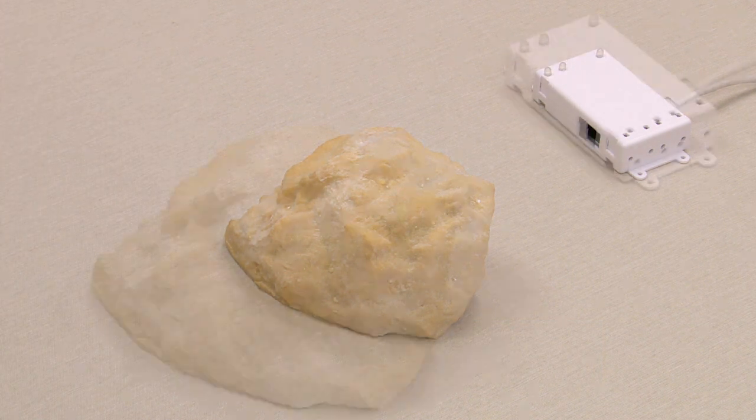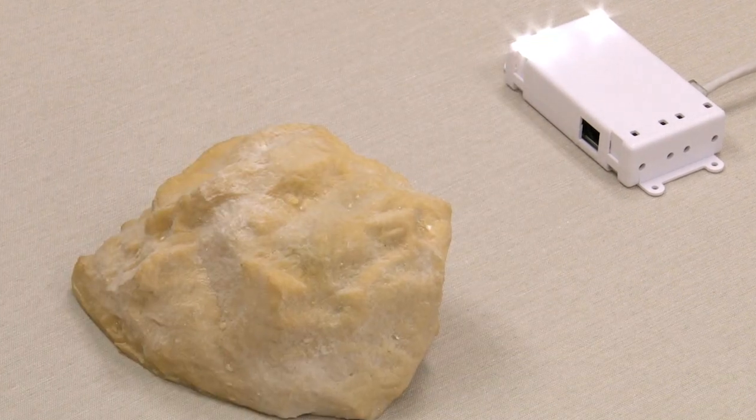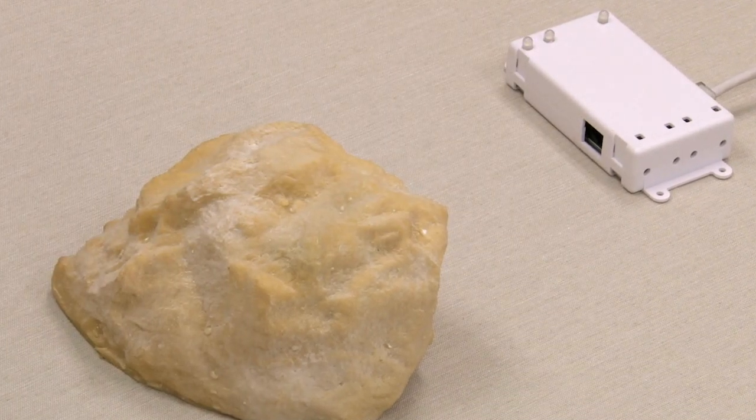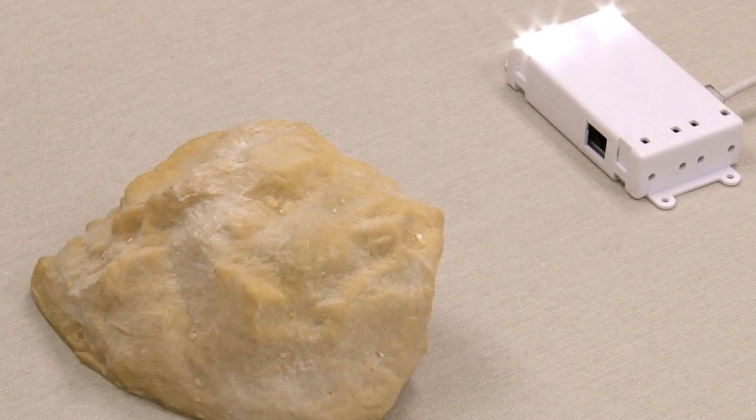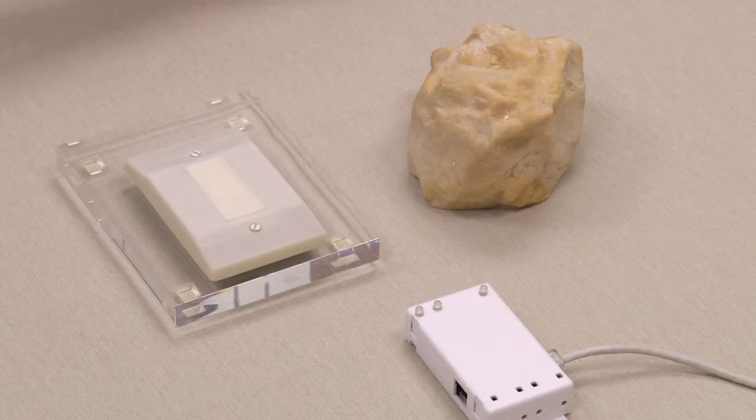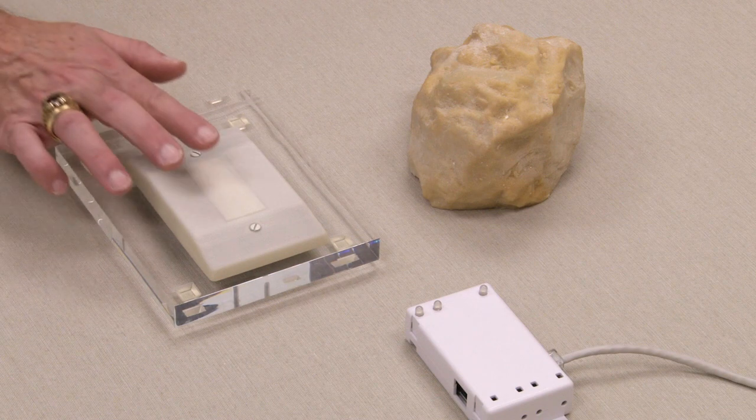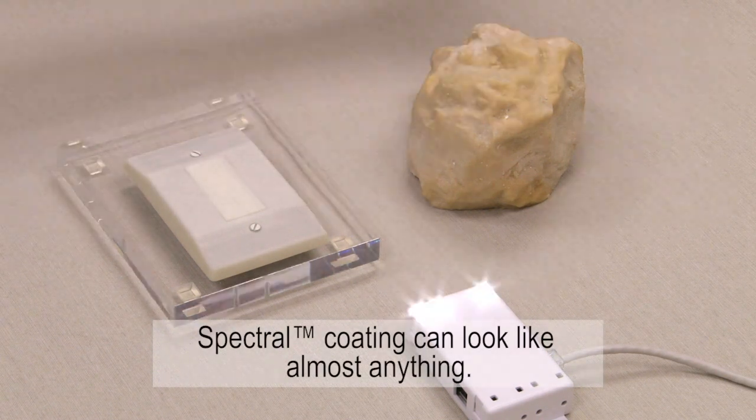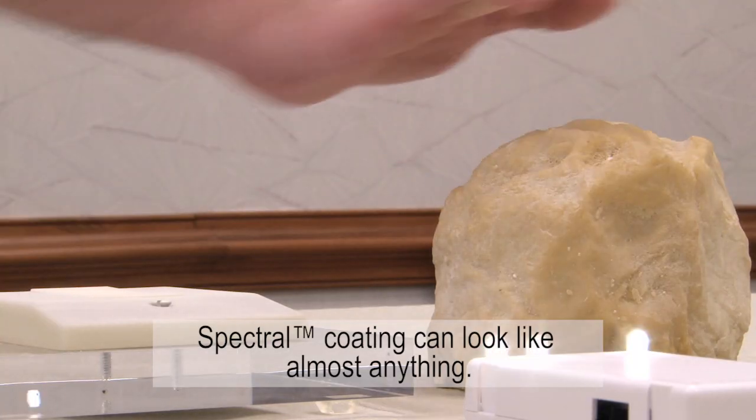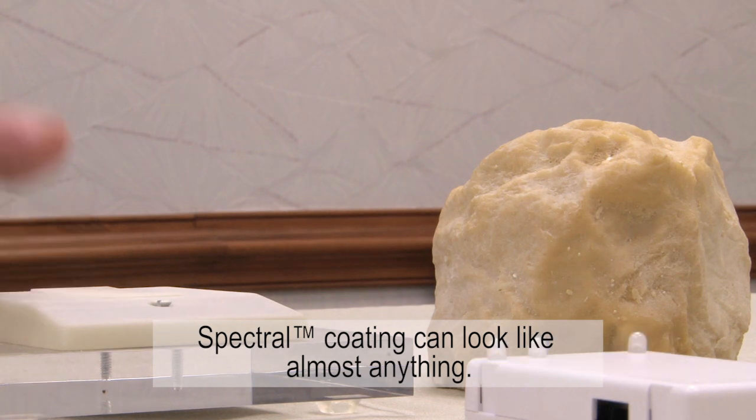The sensing and the radio transmission of the acquired data are all powered by light collected through the Spectral coating. As with the switch, there are no moving parts, nothing mechanical to wear out. And what's now made to look like a rock could look like a log, a cactus, a fence post, or almost any other opaque object.